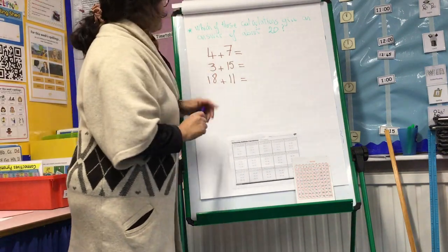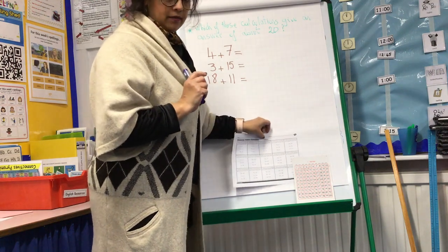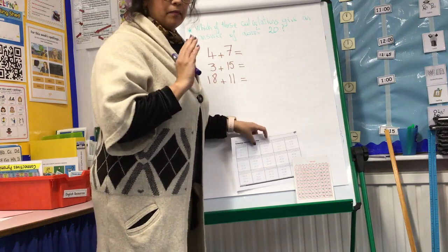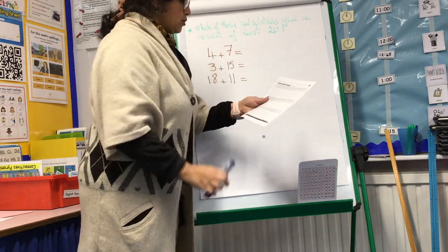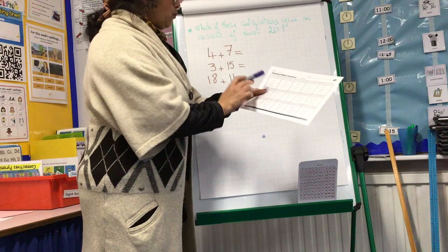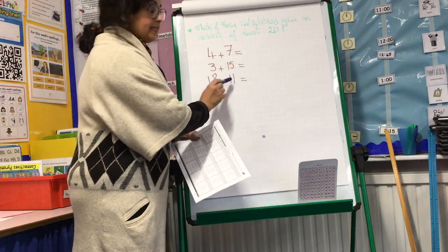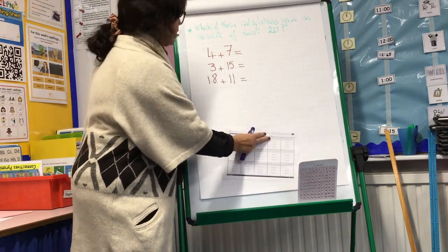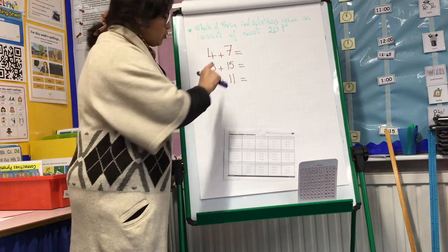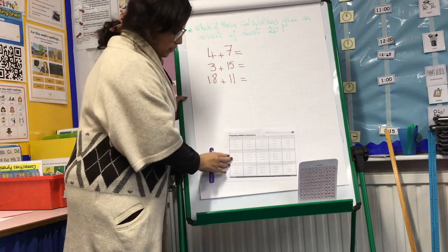Which of these calculations give an answer of about 20, not exactly 20 but about 20? Here we are going to work the estimation so we have 4 plus 7, we have 3 plus 15, 18 plus 11. Which one you think is about 20?